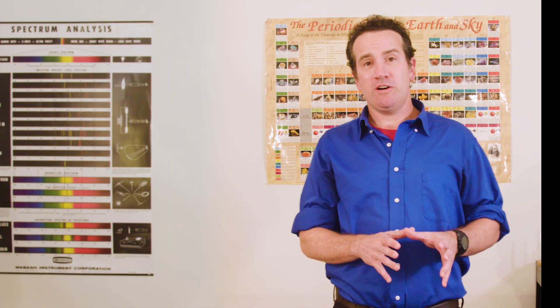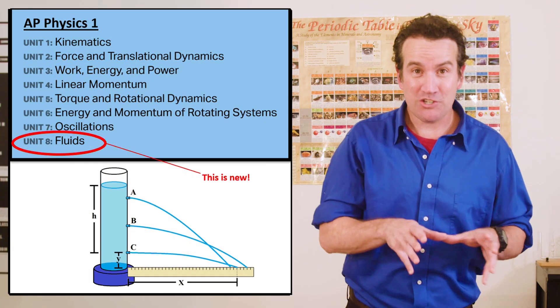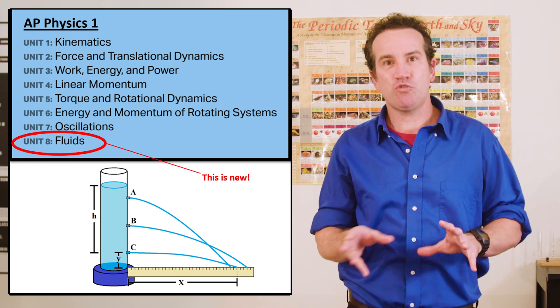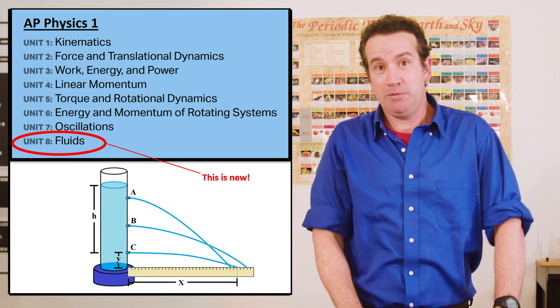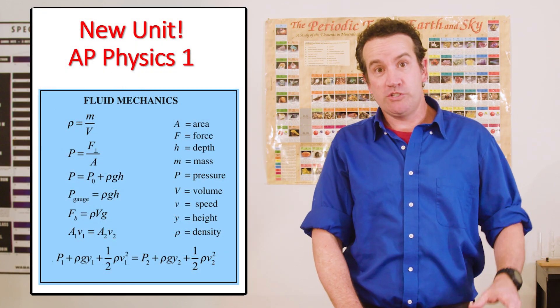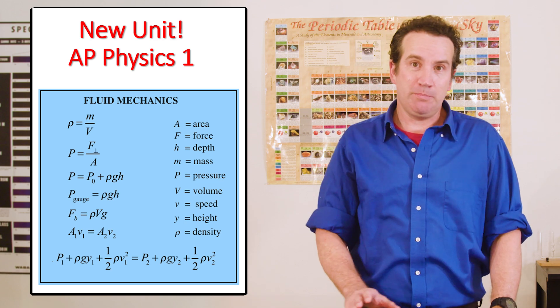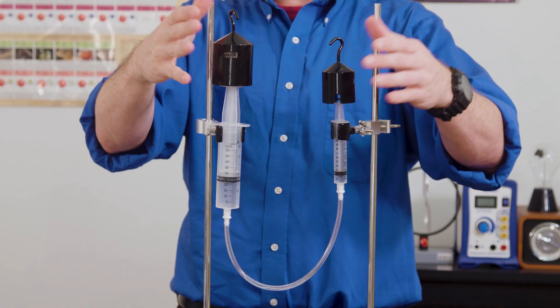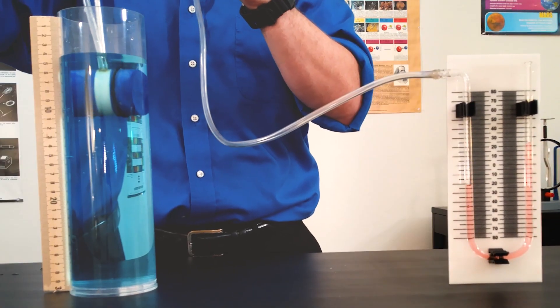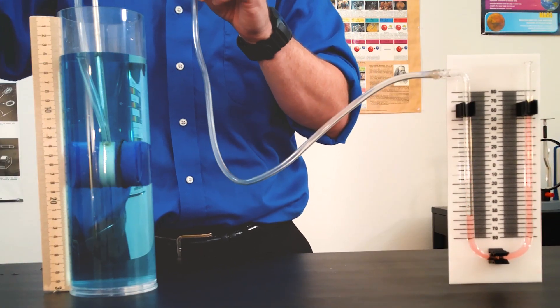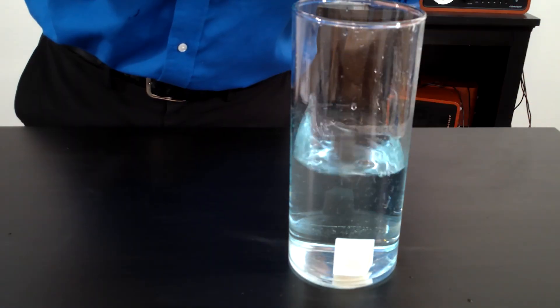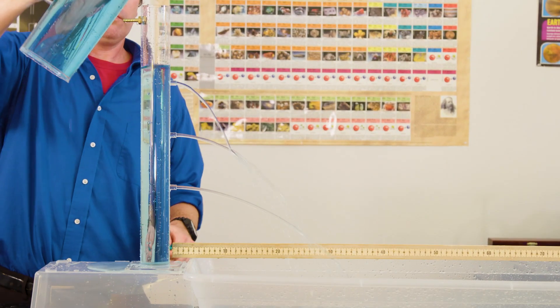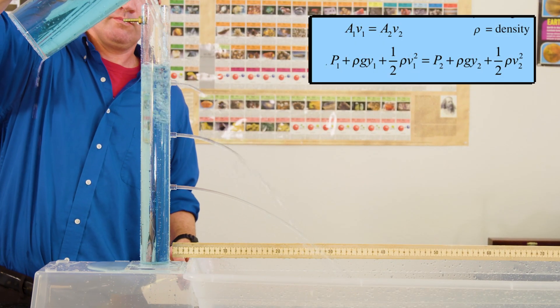Now we will talk about the exam content specific changes. AP Physics 1 is getting pretty much the fluids unit transferred directly from the old AP Physics 2. This fluids unit focuses on the four main topics of ideal fluids: the relationship between force and pressure, the relationship between pressure and depth, the buoyant force, and Bernoulli's equation, as well as the continuity equation.